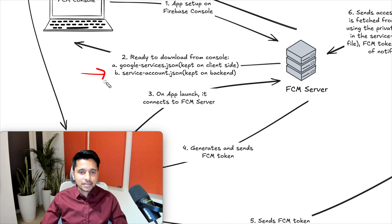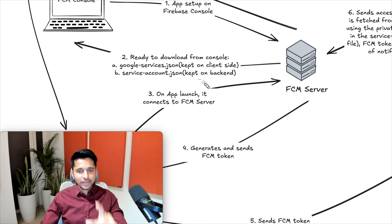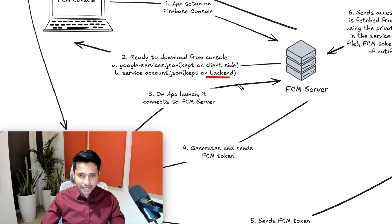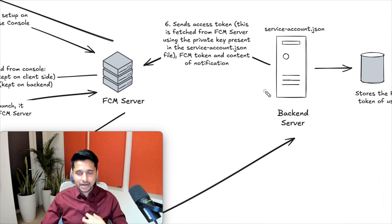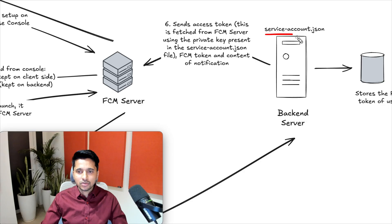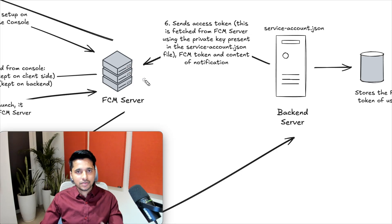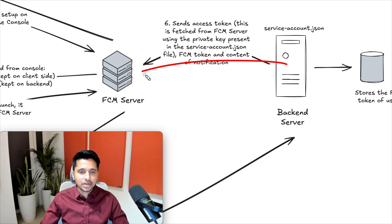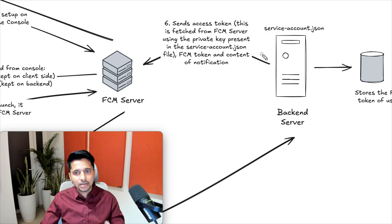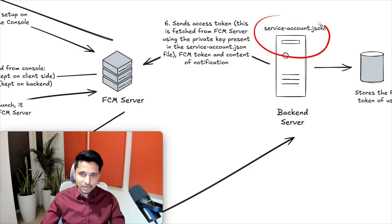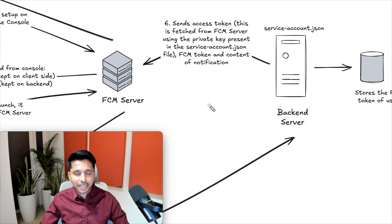The next file is service-account.json. As we've already discussed, this file is kept on the backend side — on our own backend server. This file will help us in connecting with the FCM server, and it will be used when we need to send a notification. We'll discuss exactly how in a moment.